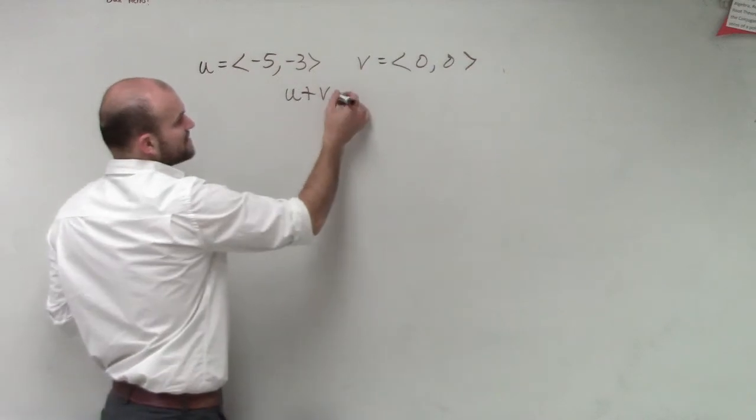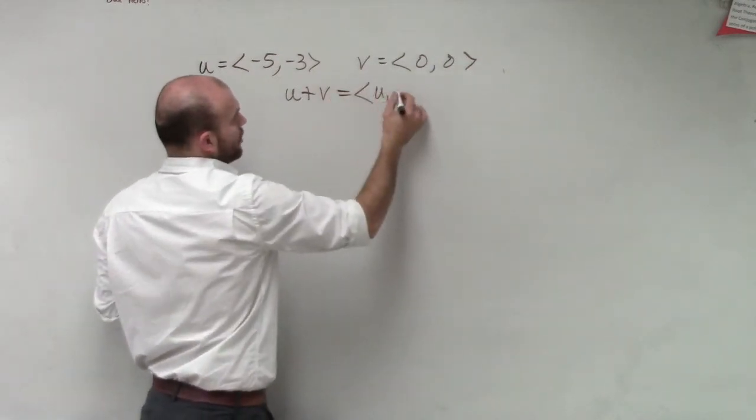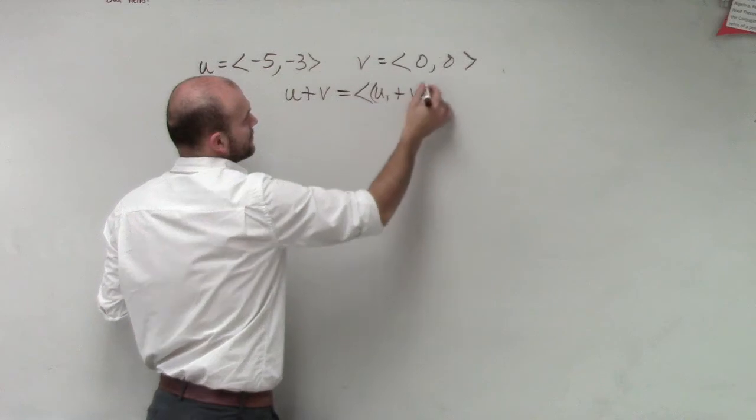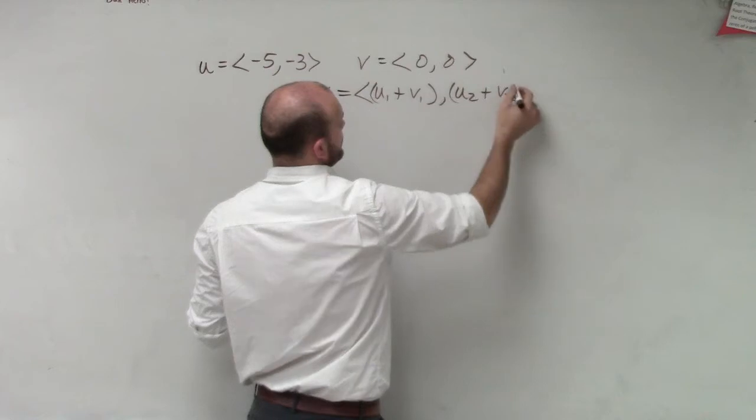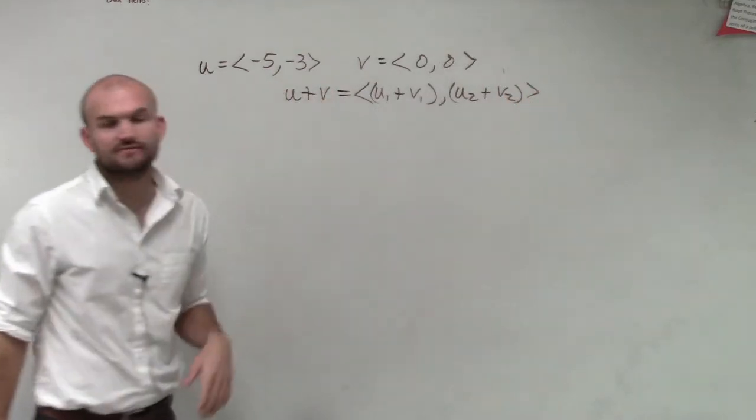if I do u plus v, what that's going to represent is u1 plus v1, comma, u2 plus v2. That was our addition of two vectors.